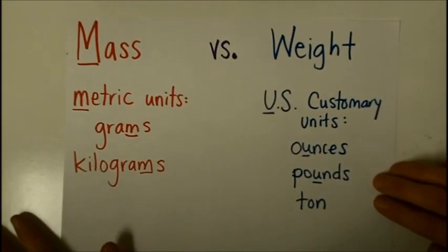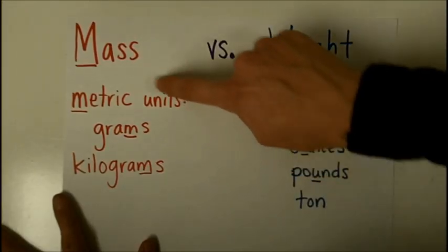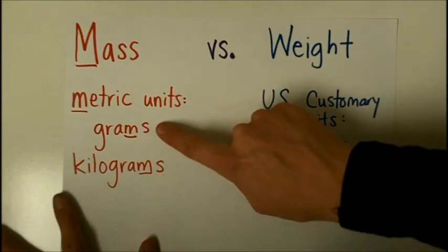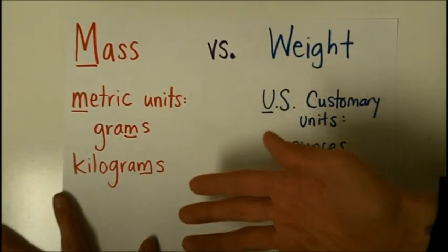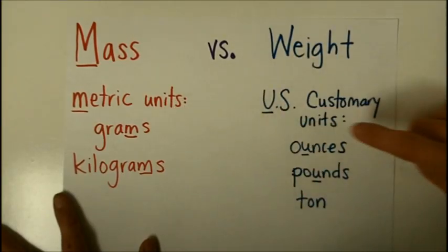One more difference between mass and weight is that mass is measured in metric units, and you can see M for mass, M for metric units. And the metric units that we normally measure in are grams and kilograms. There are other measurements, such as milligrams, but these are the two that we will use most in class.